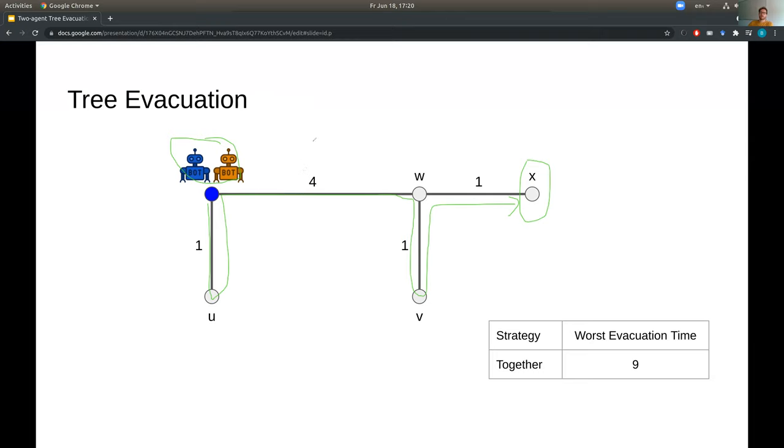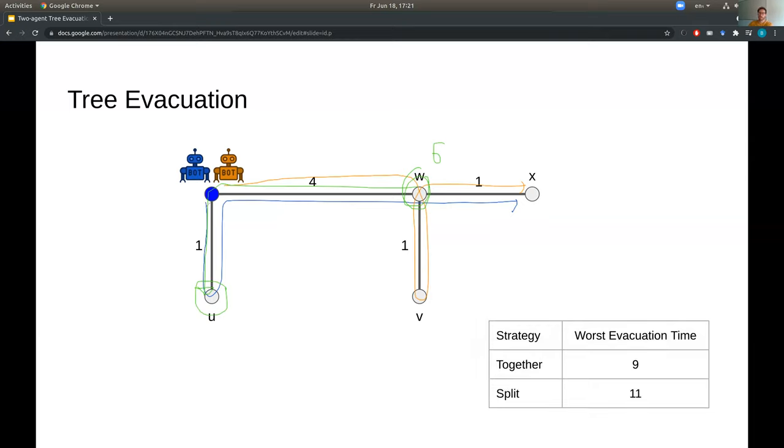But of course, this way, the robots do not explore very efficiently. So an alternative strategy might be to split up already at the start. So the blue robot might go down to u, and then to x, whereas the orange robot goes down to v instead, and then to x. But now, what happens if the exit is actually at u? So the blue robot found this straight away, but they only meet up at w at time 6. And then it takes still an extra 5 time to now go back to the exit at u. So they would exit at time 11. So in this case, in fact, splitting is worse. And we see that there is this trade-off between exploring efficiently in parallel and staying close together.